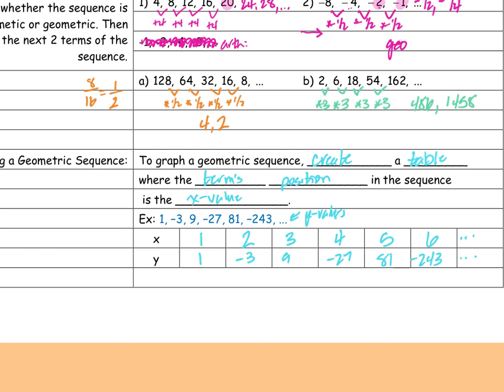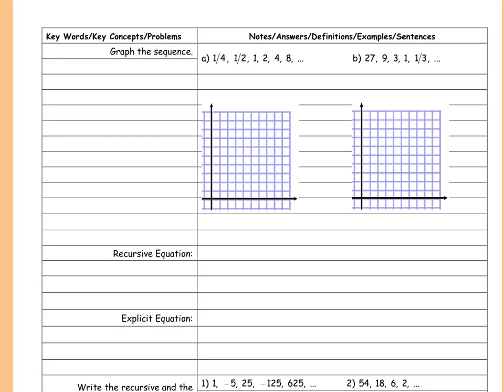So the points would be (1, 1), (2, −3), (3, 9), (4, −27) — we'd probably never graph (5, 81) or (6, −243) because our graphs wouldn't go that big. But we're going to practice doing that now with a couple examples.